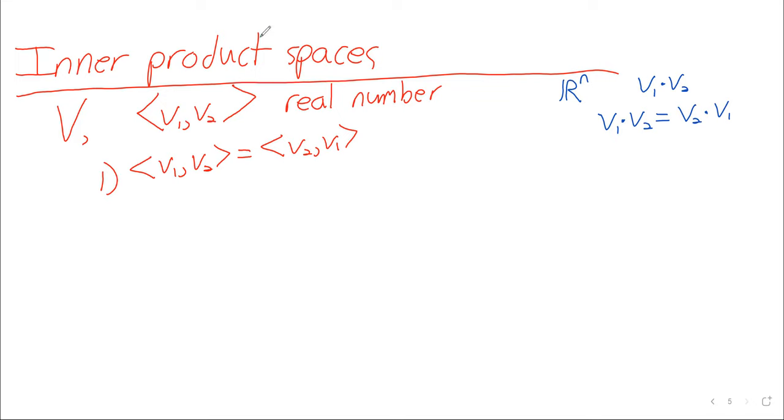Suppose that this function satisfies some properties. First, that <v1, v2> should equal <v2, v1>. This is the statement that a vector dot another vector, order doesn't matter. This is just the statement that dot products distribute over addition.